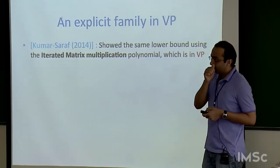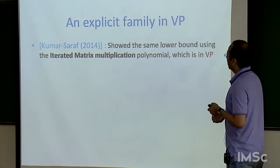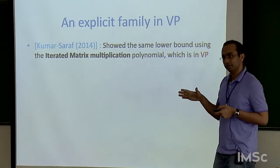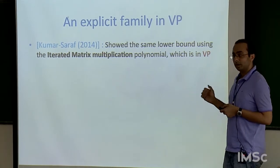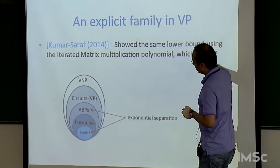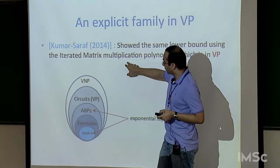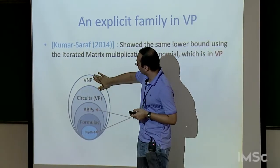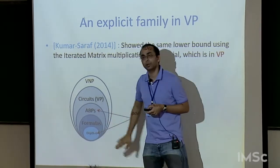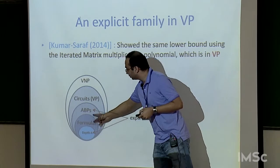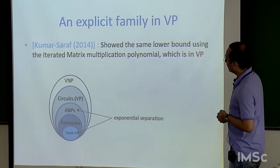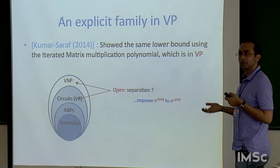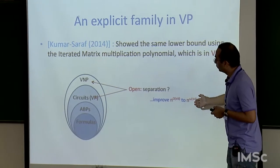In follow-up work, Meenal and Shivangi showed that one can start with the iterated matrix multiplication (IMM) family — which is in VP — and achieve the same bound. Their result implies IMM is complete for algebraic branching programs (ABP). The complexity class hierarchy is VNP ⊇ VP ⊇ ABP ⊇ homogeneous formulas, and the result gives an exponential separation between ABP and homogeneous depth 4 formulas.